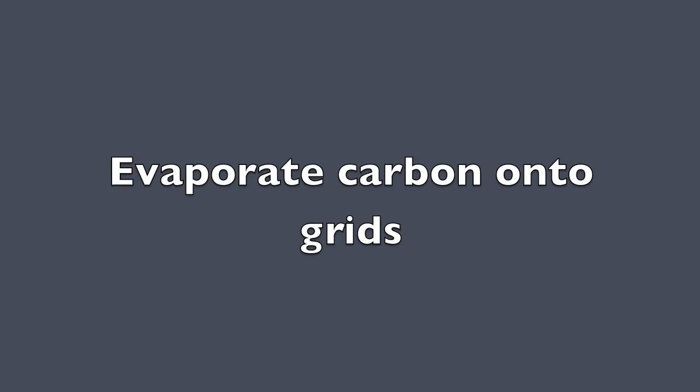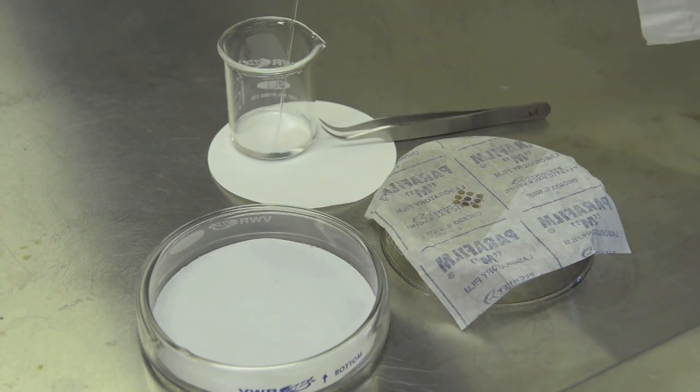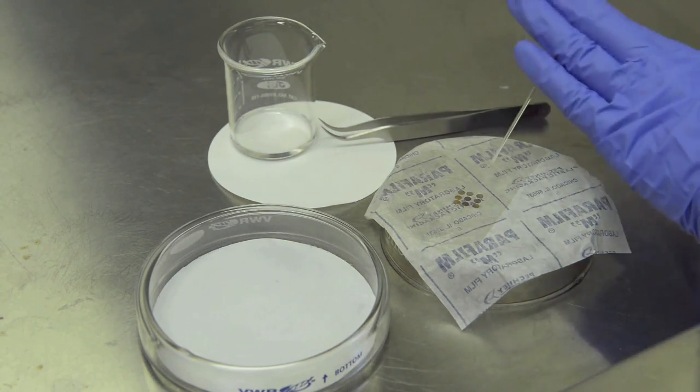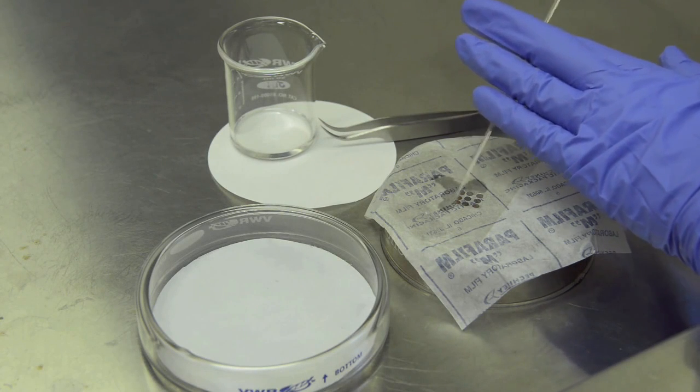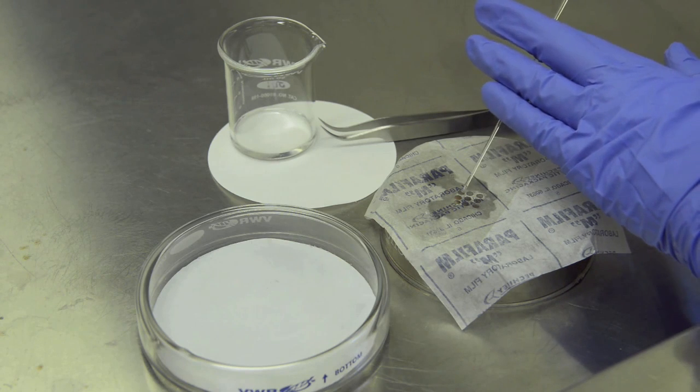Quickly evaporate carbon directly onto the setup with the grids. Carefully rinse the grids with chloroform in a fume hood one to three times until the grids easily come off the parafilm backing paper.